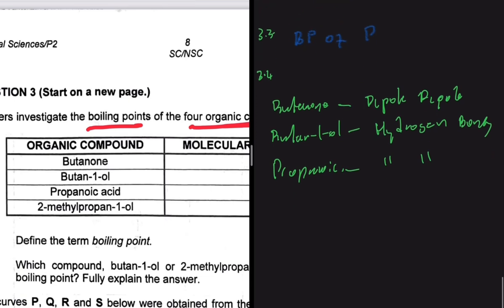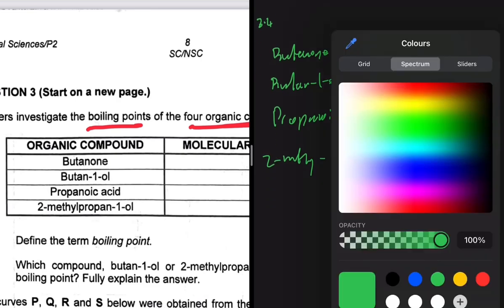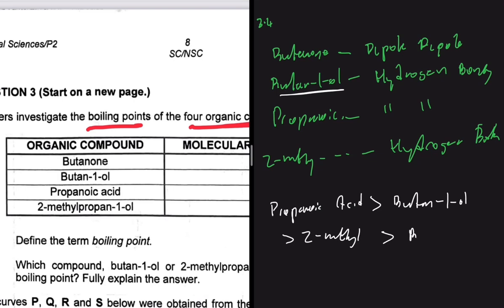2-Methylpropan-1-ol also has hydrogen bonding. So ranking by strongest intermolecular forces: first is propanoic acid, second is butan-1-ol, third is 2-methylpropan-1-ol, and last is butanone. Now we can attempt answering the questions.